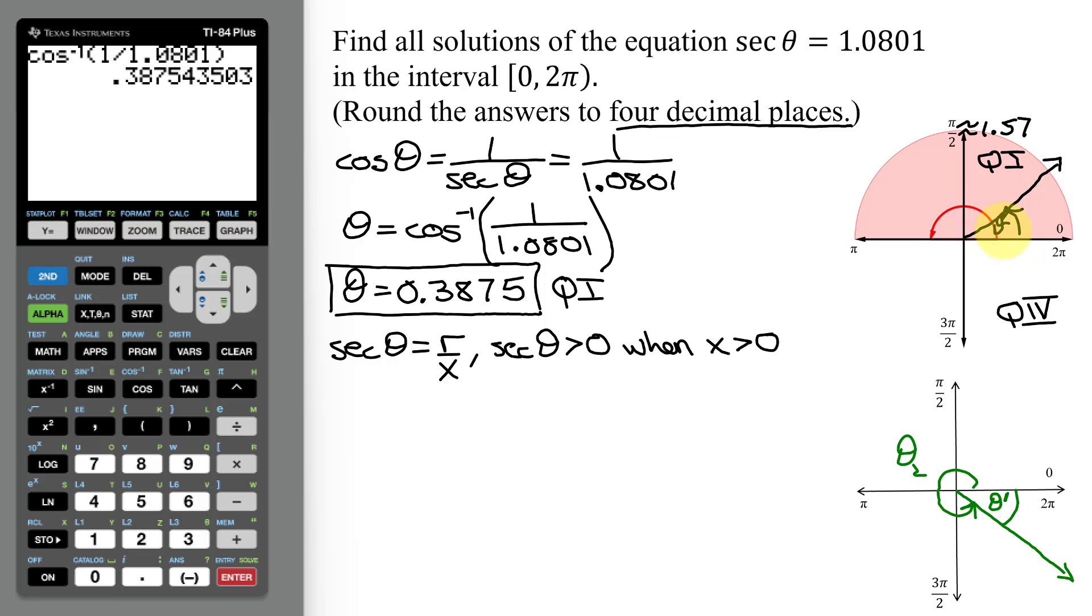Well, for angles in quadrant 1, to find the reference angle is very easy. They are equal to their reference angles. These two reference angles are equal. So I know my reference angle equals 0.3875. Now to find my second solution, theta sub 2, looking at the picture, I know theta sub 2 plus my reference angle has to add up to 1 revolution of 2π. So theta sub 2 is 1 revolution of 2π minus my reference angle of 0.3875.